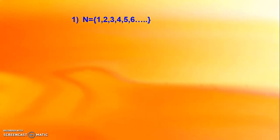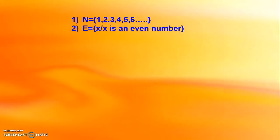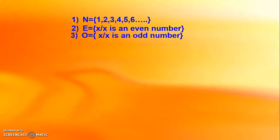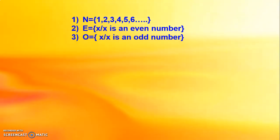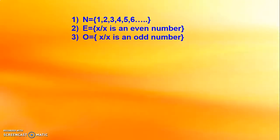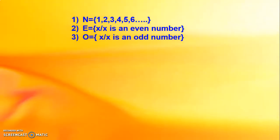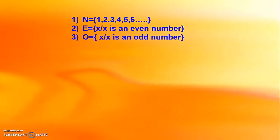Let us consider a set of natural numbers N, equal to 1, 2, 3, 4, 5, 6, etc. It is a set of natural numbers. Let us consider a set E such that X is an even number, and set O which is equal to X such that X is an odd number. The set of natural numbers is given in roster form, while set E and set O are given in set builder form.